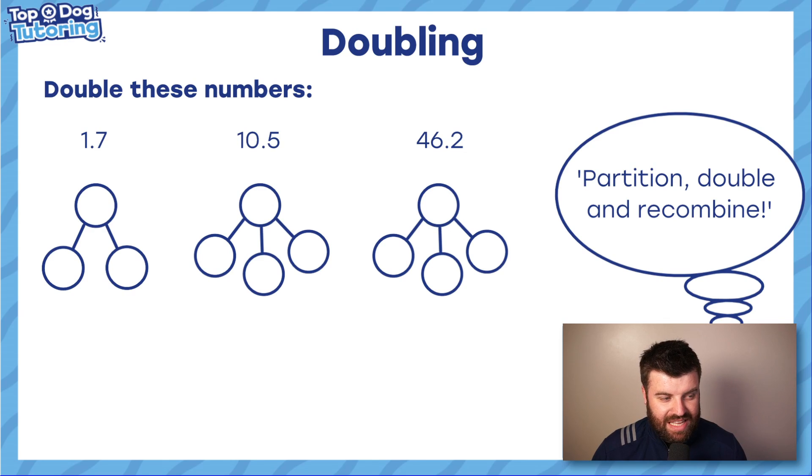This is slightly trickier. It's the same method. So I want you to partition it still. It's just this time we go into decimal places. I want you to have a go yourself first. See if you can do it. Partition it, double each part, and then put them back together at the end.